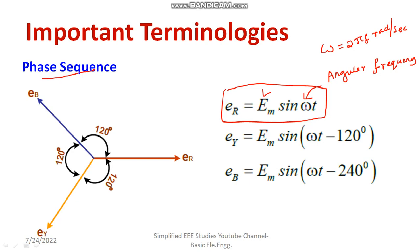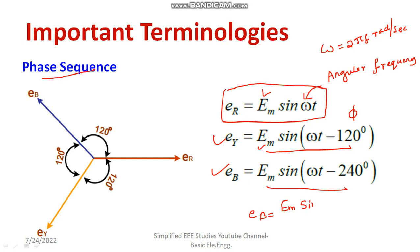Moving on to the second line, eY = Em × sin(ωt − 120°), where Em is the peak or maximum value. There is a displacement of 120 degrees, so φ = 120°. For the third conductor, eB = Em × sin(ωt − 240°), which can also be written as eB = Em × sin(ωt + 120°). Both forms are acceptable.